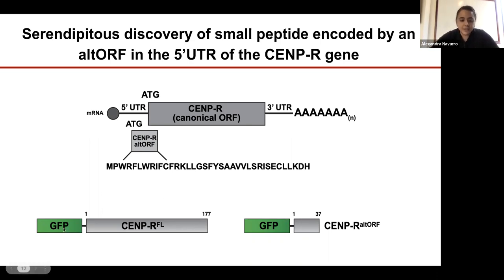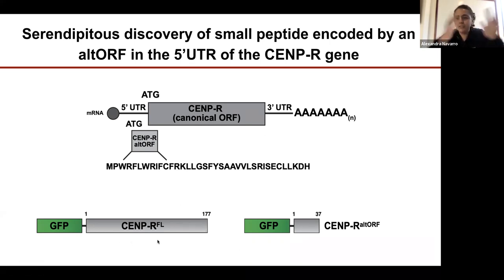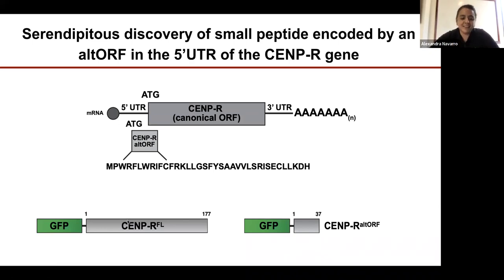Interestingly, we found that there was a small 37 amino acid peptide that could be expressed from an alternative open reading frame in the mRNA of SEMP-R, starting upstream of the canonical start for the full-length protein. So we ended up with two versions of SEMP-R we were really interested in.